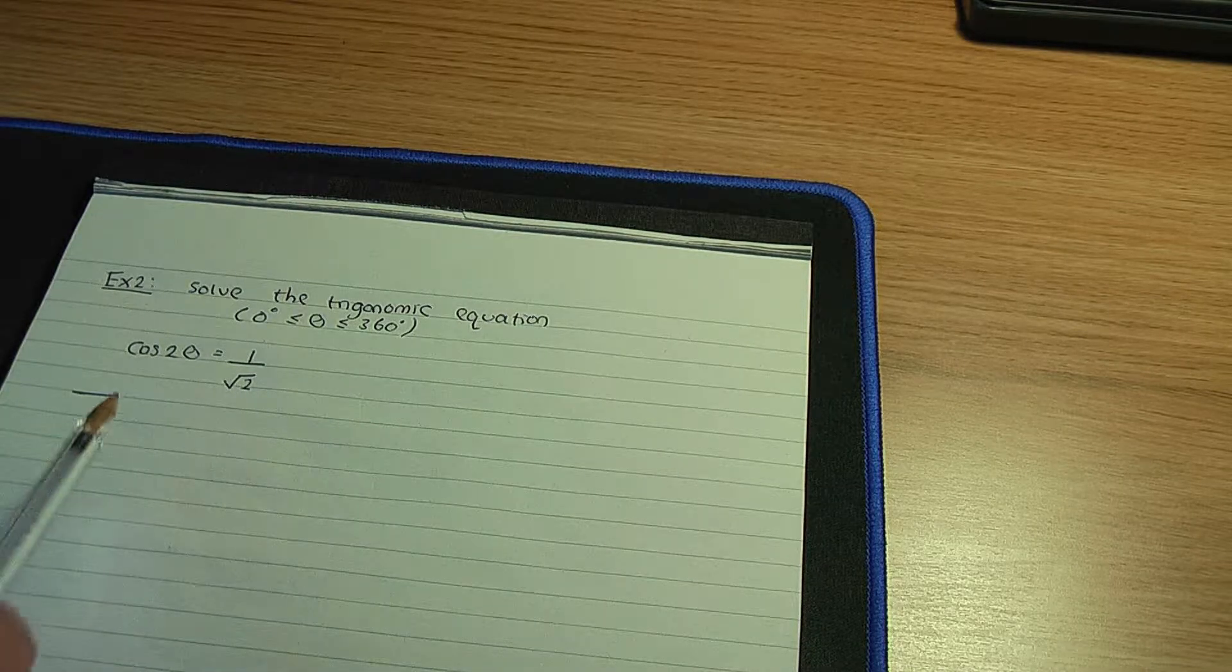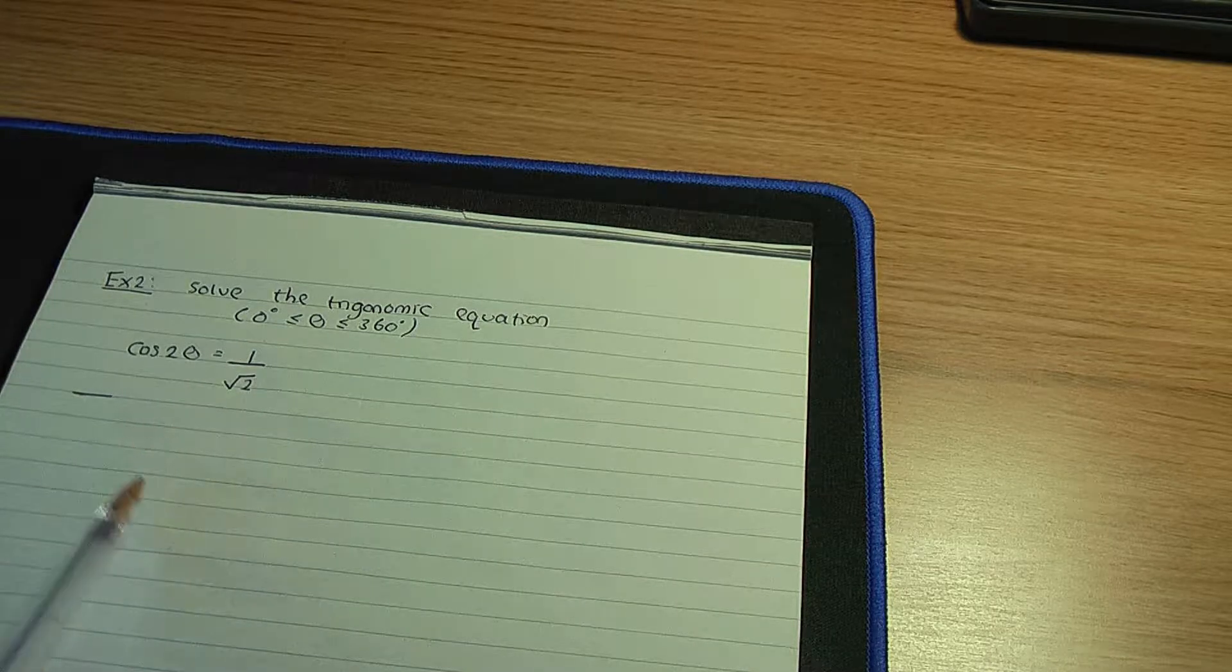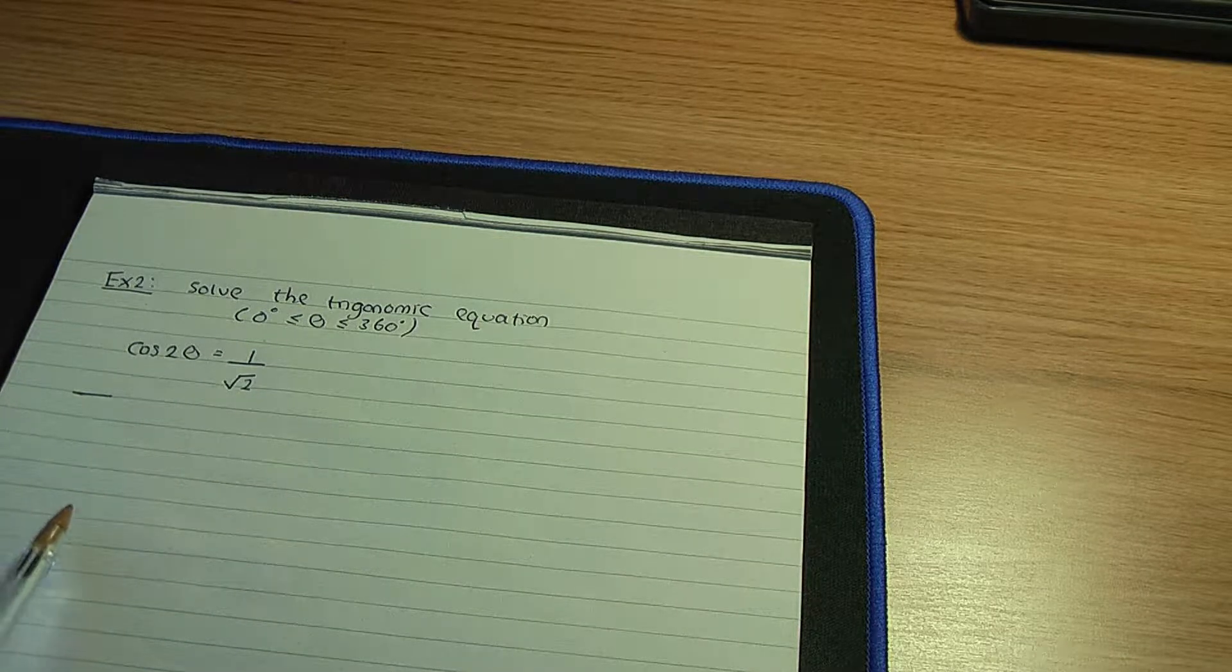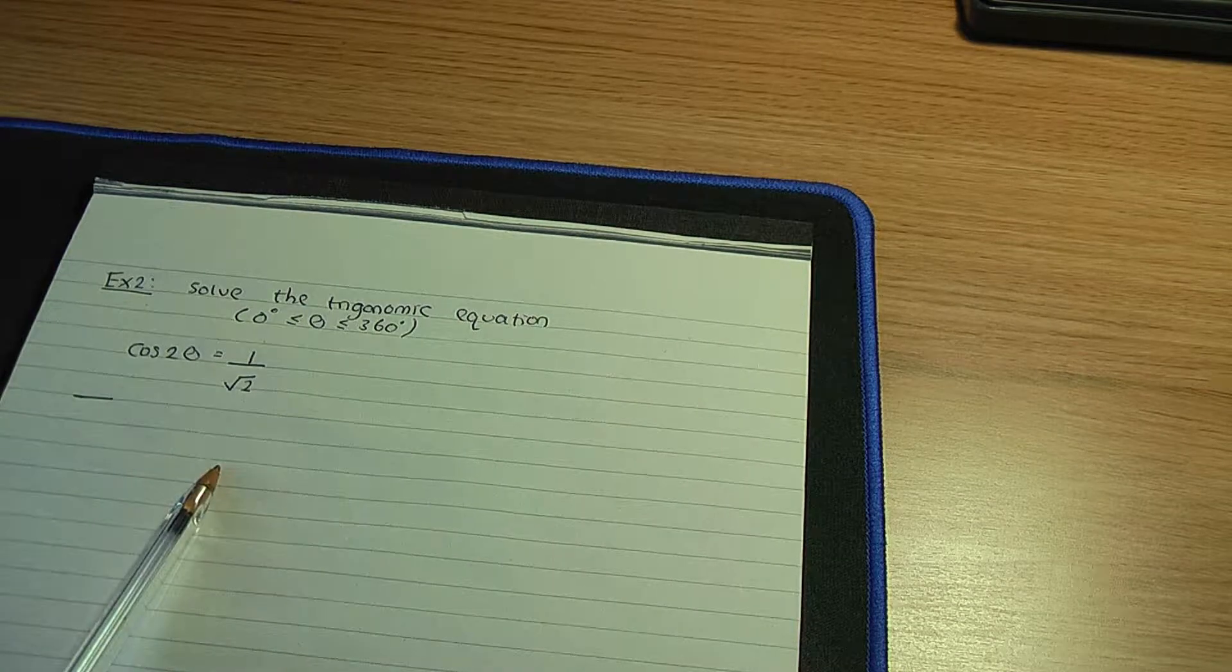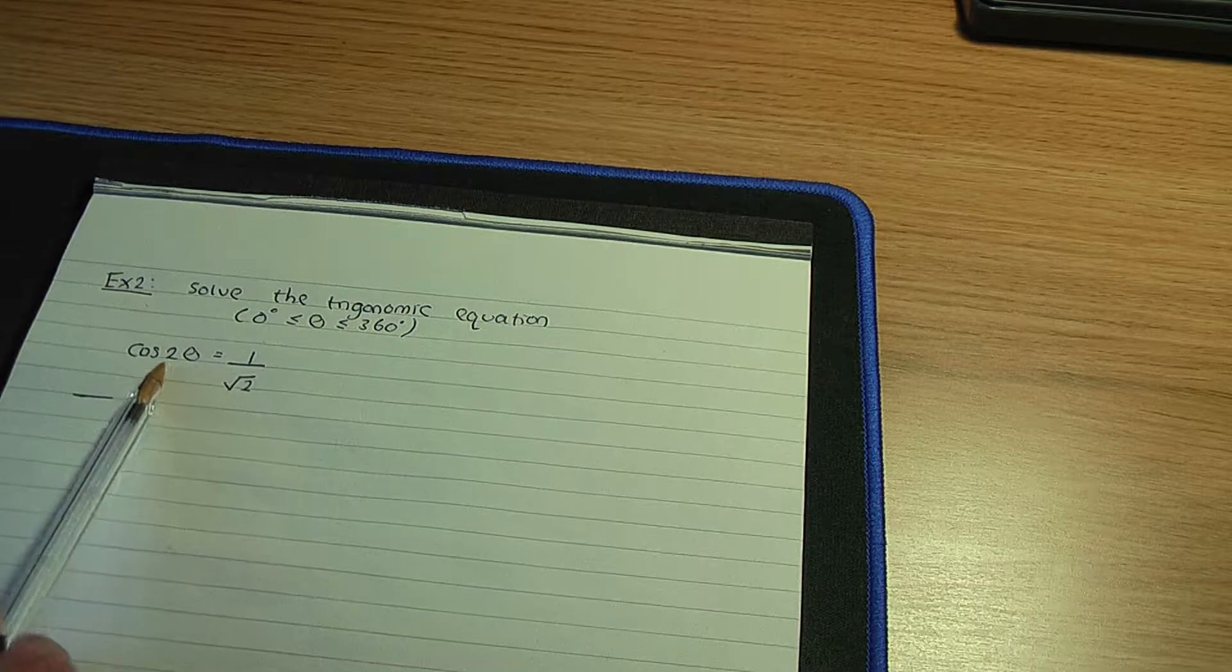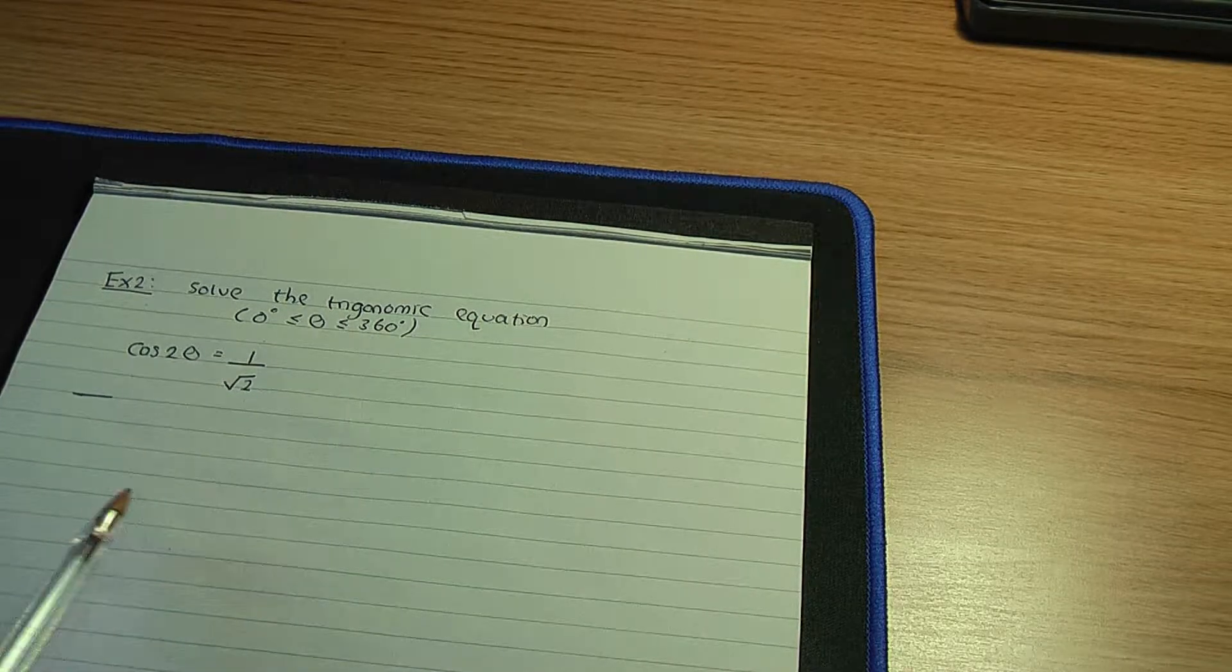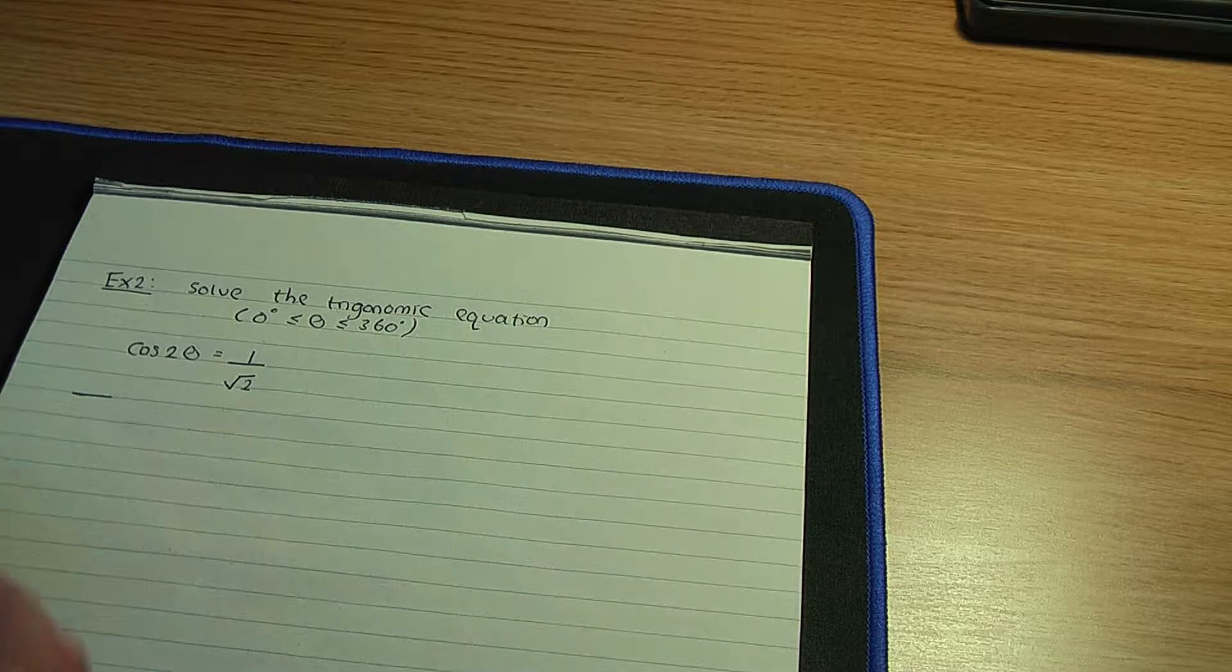My equation will become cos t = 1/√2. The idea is to find all of the t values first, or the t angles first. Since t = 2θ, to find the theta angles we'll divide all of the t angles by 2. Let me show you the method.